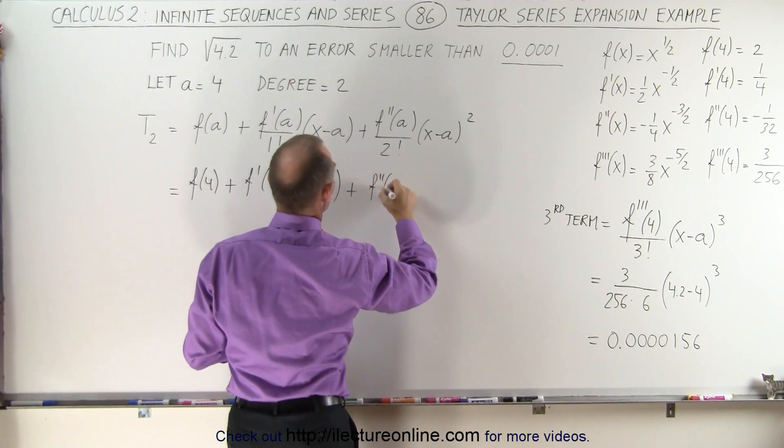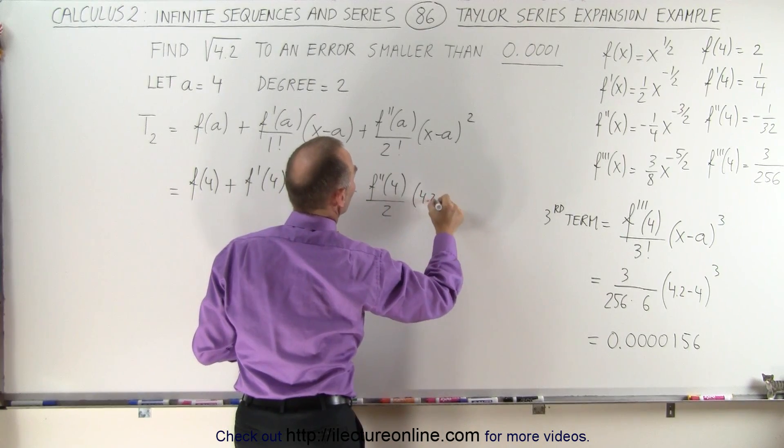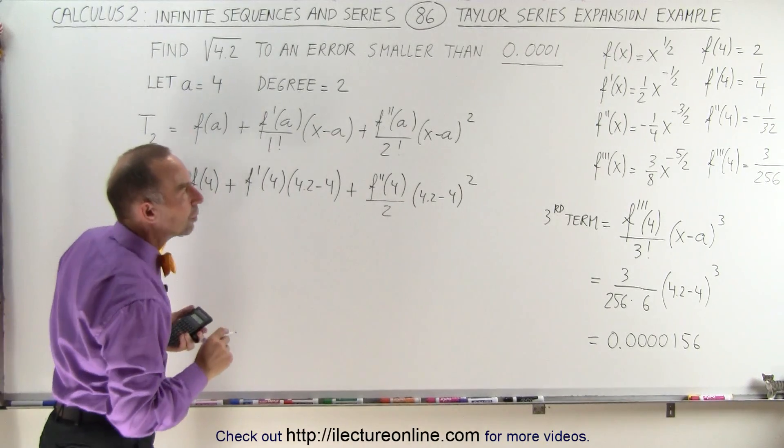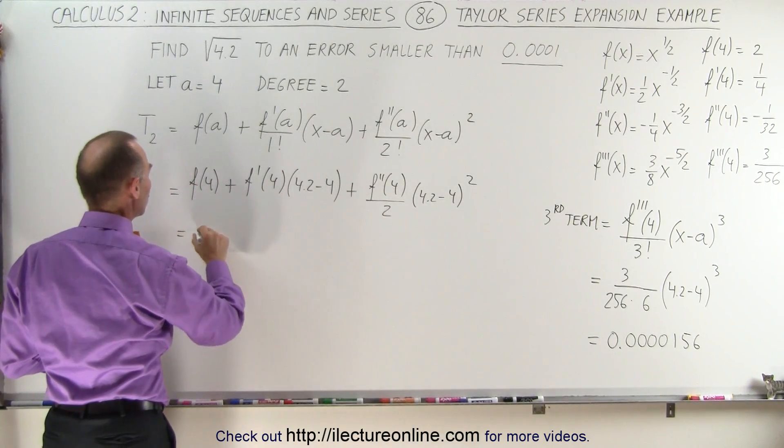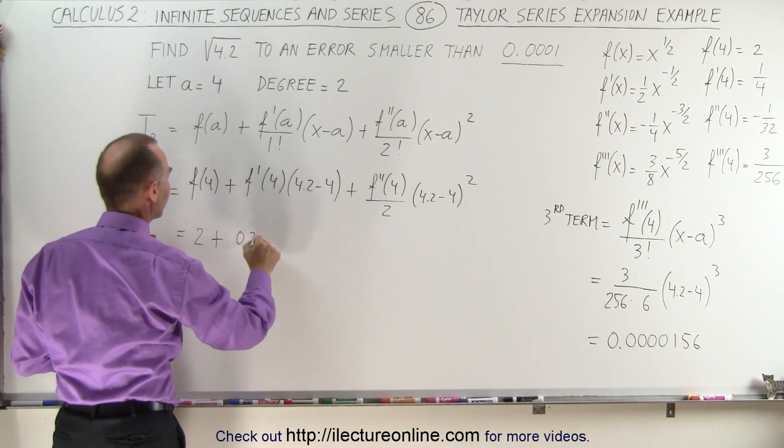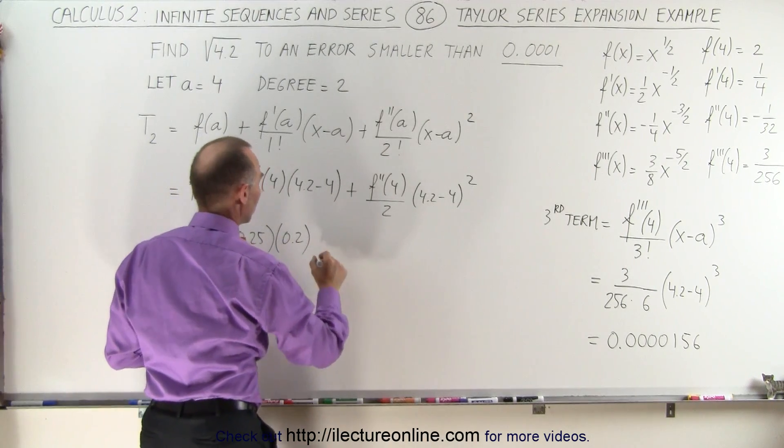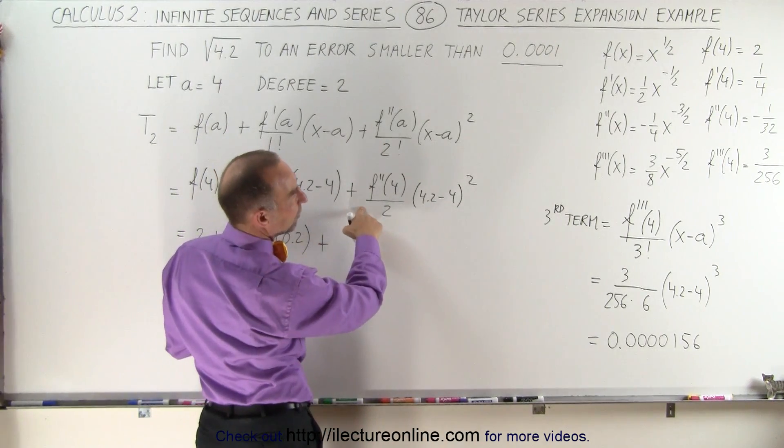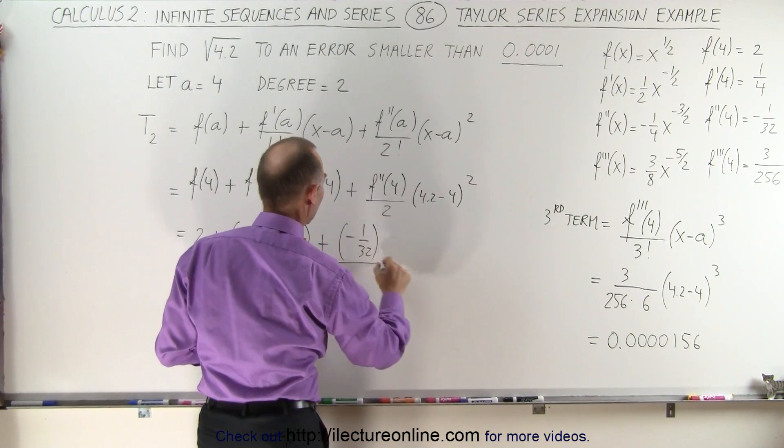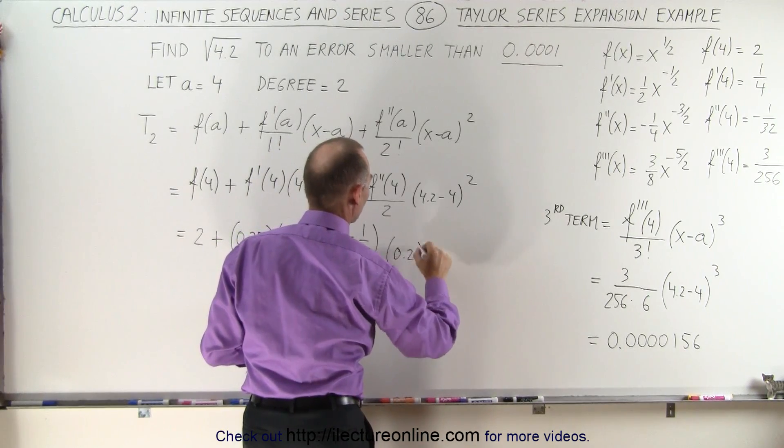This is equal to 2 plus f prime of 4, that would be 0.25 times 0.2, plus the second derivative evaluated would be minus 1 over 32 divided by 2 times 0.2 squared.